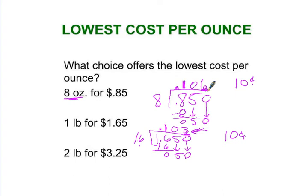2 pounds for $3.25. I'm going to do it over here. So that's 32 ounces for $3.25 because 2 pounds is 32 ounces. 16 plus 16. And you can do that right up here. 16 plus 16 equals 32.